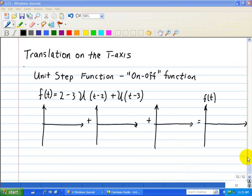We're going to take a look at the unit step function and see how it can be used to write piecewise defined functions in compact form. Let's say we have a function here defined as f(t) = 2 - 3u(t-2) + u(t-3).